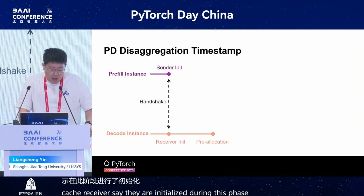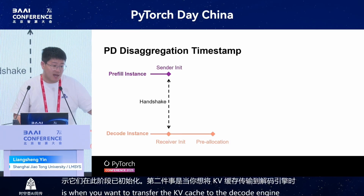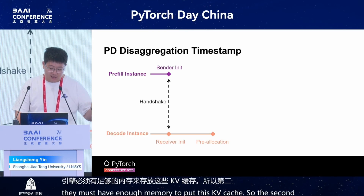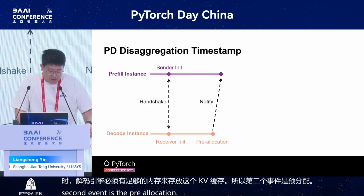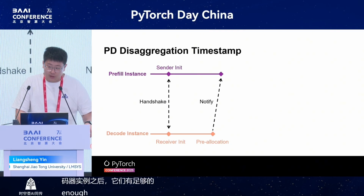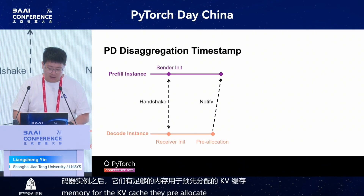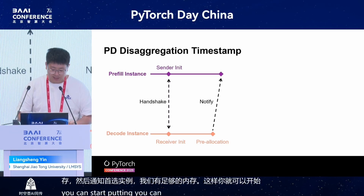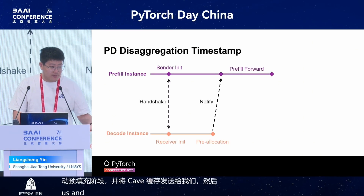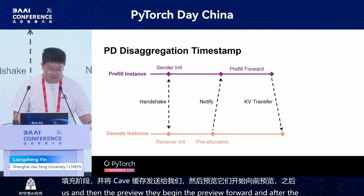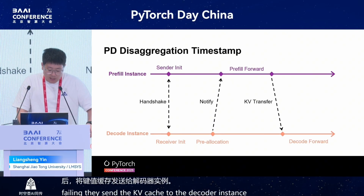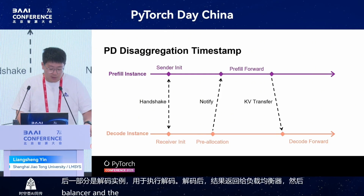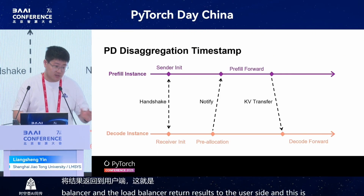When transferring the KV cache to the decode engine, the decode engine must have enough memory to hold it. So the second event is pre-allocation: the decode instance pre-allocates KV cache in the memory pool, then notifies the prefill instance that it has enough memory and can start prefilling and send the KV cache. The prefill instance then begins the prefill forward pass and sends the KV cache to the decode instance. Finally, the decode instance performs decoding, and the result is returned via the load balancer to the user.